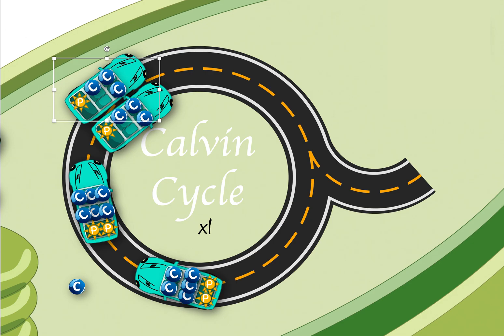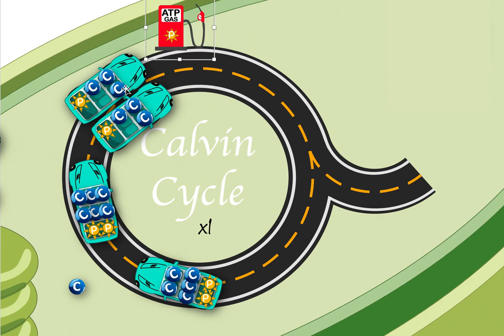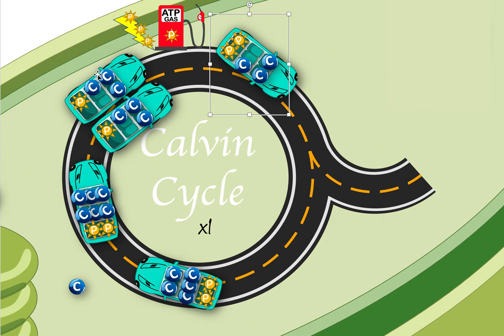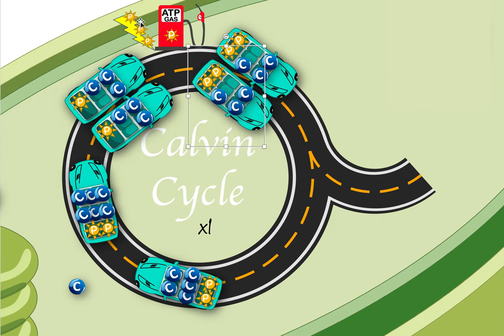They wait for another car, but the new car has no energy, so they take some fuel and share it. In science terms, these two three-carbon molecules reach a gas station representing ATP. ATP donates a phosphate to each molecule, recharging them so they each have two phosphates. When ATP gives up its phosphate, it becomes ADP.